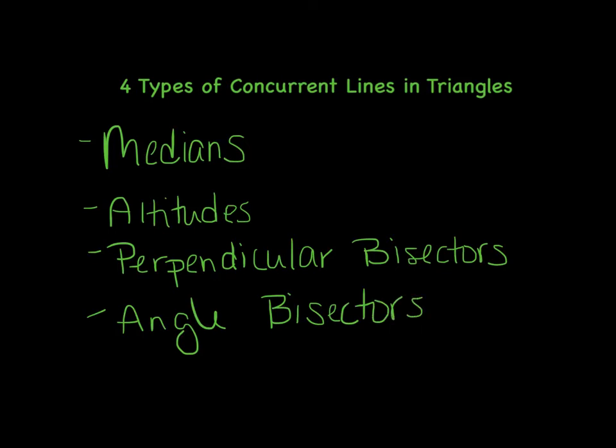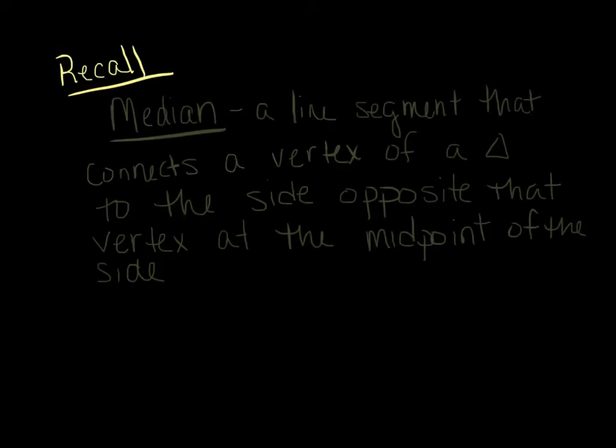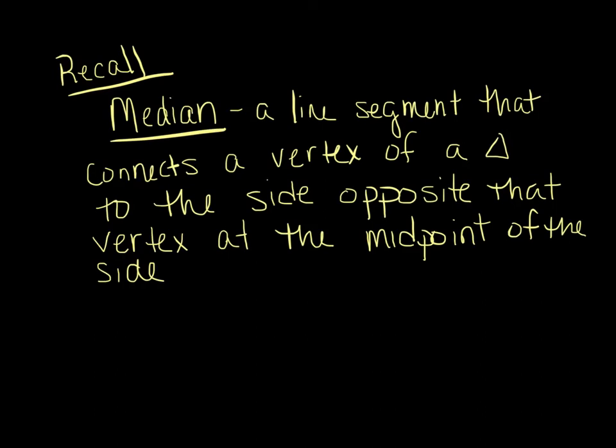Now when we look back at the definition of concurrent lines, we have to have three or more. We have to do a little bit of review of what these things are. At this point you should pause the video for a moment and try to recall the definition of median, altitude, angle bisector, and perpendicular bisector. So pause the video for a minute and see if you can remember.